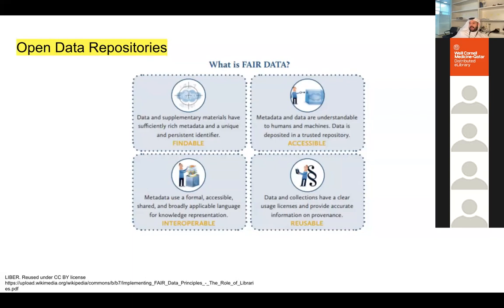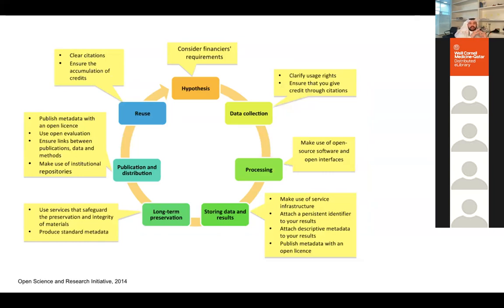When it comes to open data repositories, we often refer to data being FAIR — Findable, Accessible, Interoperable, and Reusable. So free is only part of the solution. Open science, if you look at the scientific cycle from hypothesis to data collection, processing, storage, long-term preservation, and distribution, tries to introduce open practices at each step.